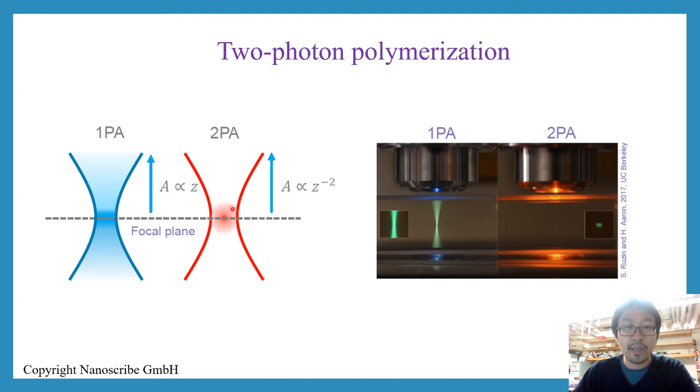In this way you can improve the resolution. The right-hand side is a photo showing you how different they are. The hourglass is here, this is one photon process. This little tiny volume is two-photon polymerization.